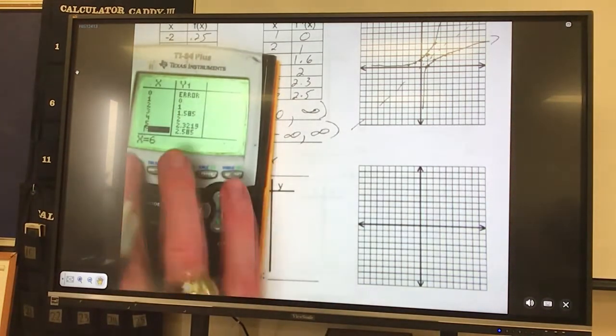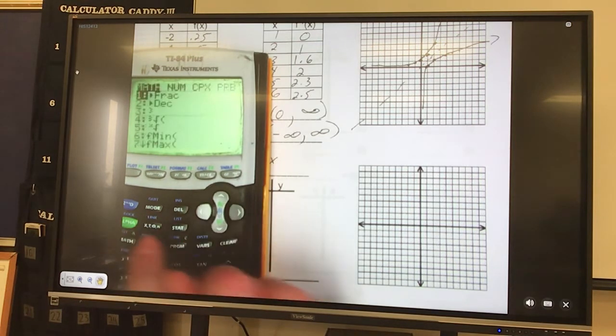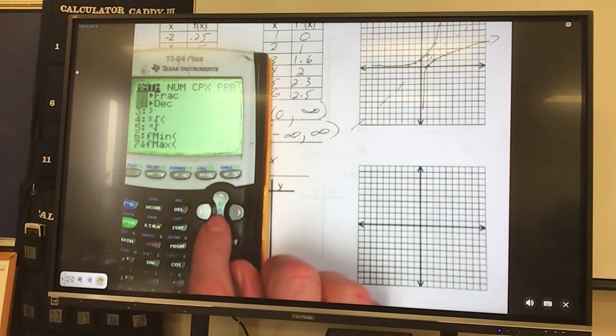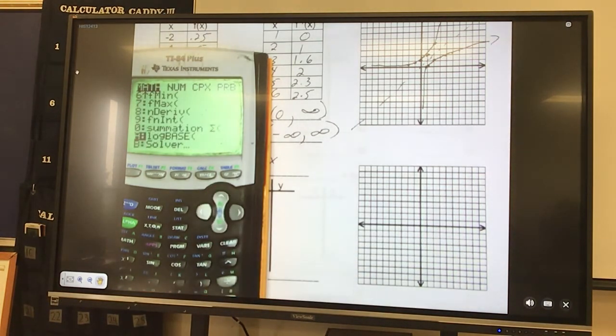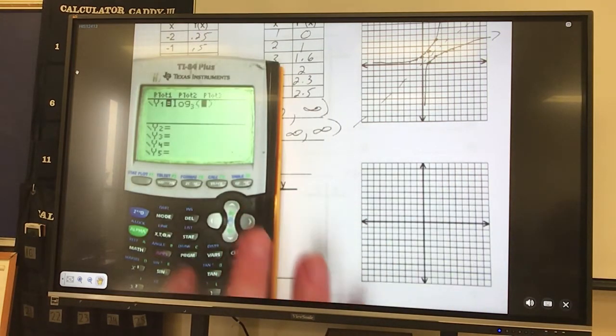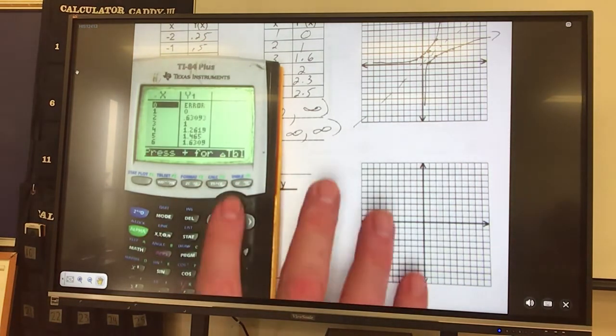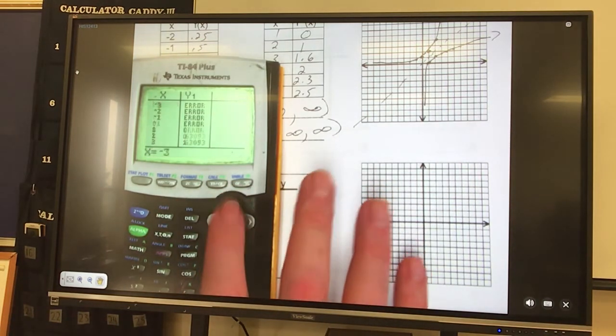So now I'm ready to put that guy into my calculator. Again to get to log with a base other than 10, I go math, and then I go down. Oops, passed it, to A. And it's a log base 3 to the x. And then I go to my table. And those are error points, don't want them.